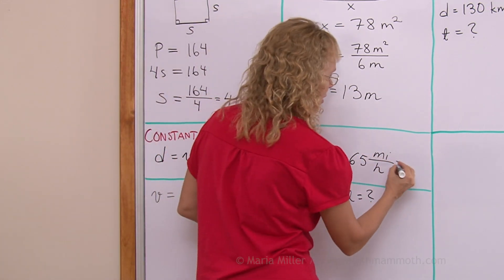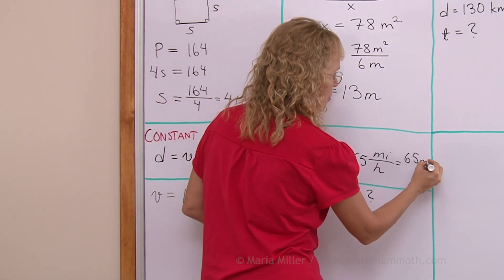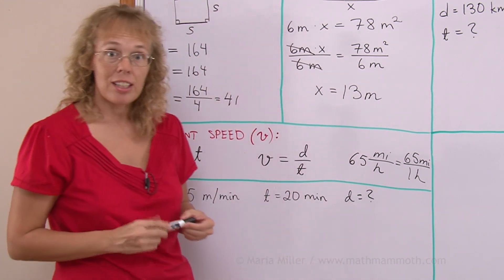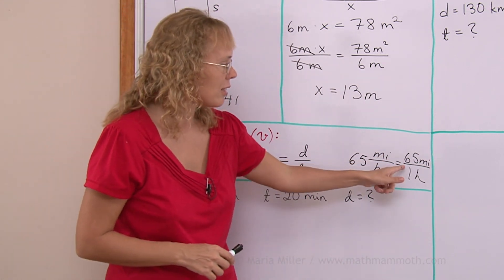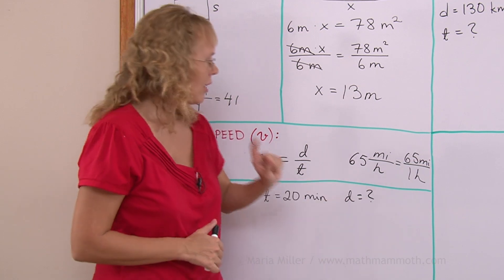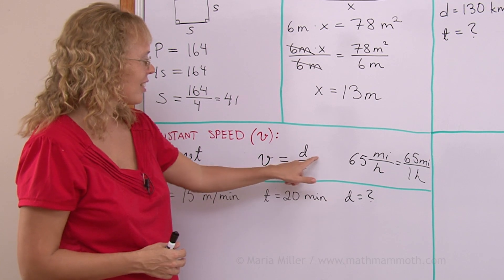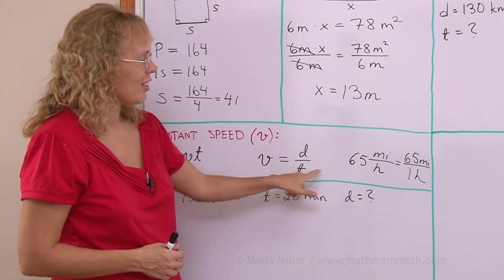The 65 miles is the distance and one hour is the time. This is the same as 65 miles and one hour. You see what is here is a distance divided by time. And that gives you the velocity, the speed. The speed is always distance divided by time.